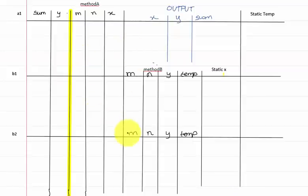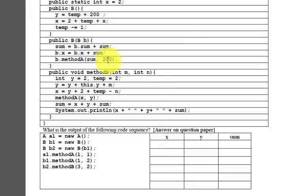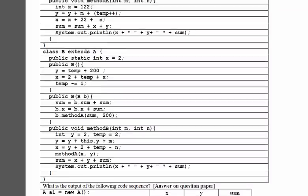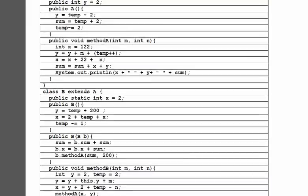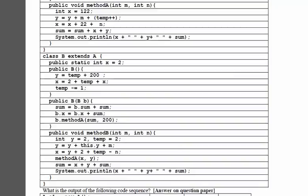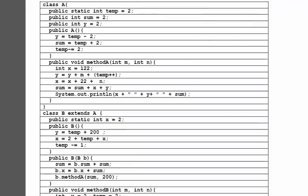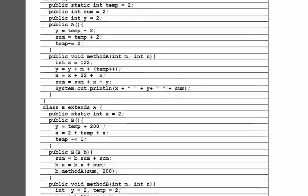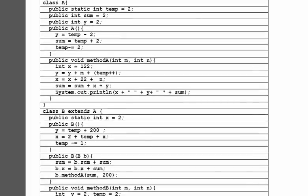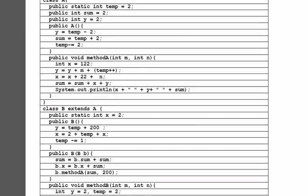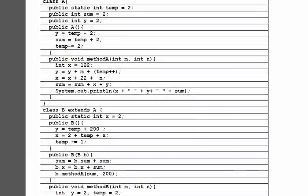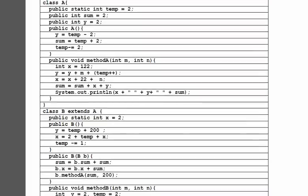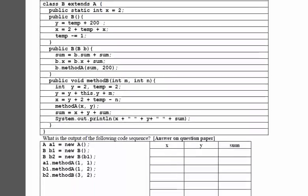Hello everyone, today we're going to be looking into another tracing, but this time the difference is that we will also have to deal with inherited classes. Last time we just had a simple program with methods, variables, static variables, non-static variables, and constructors. But this time we have to deal with how Java works when we have inherited classes. Class A and class B are two classes, but class B is the child of class A, which means class B will have access to all of class A's methods and variables, but class A won't have access to class B's variables and methods. It's a one-way communication: B has access to A, but A won't have access to B.